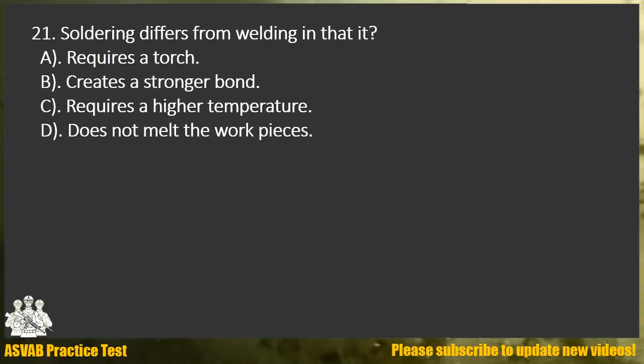Question 21. Soldering differs from welding in that it: A. Requires a torch. B. Creates a stronger bond. C. Requires a higher temperature. D. Does not melt the work pieces.